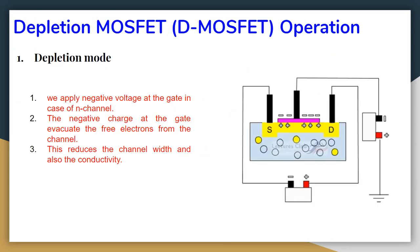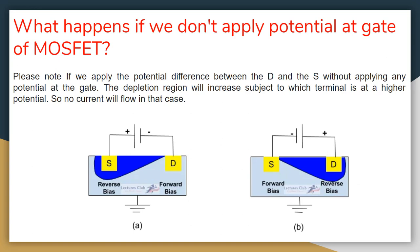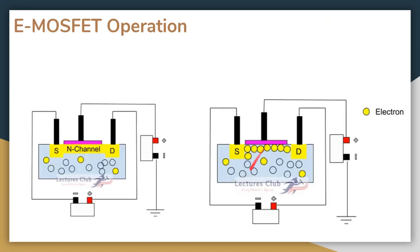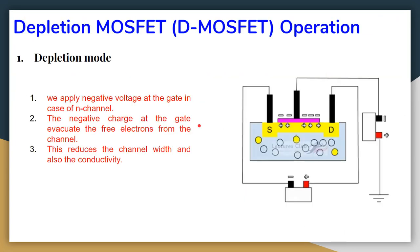To summarize: in an E-MOSFET, we create the channel by applying voltage at the gate. In a D-MOSFET, we do not need to create a channel — we only apply the potential to control the conductivity of the already-existing channel between the drain and source.